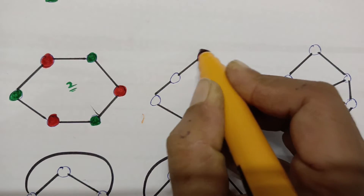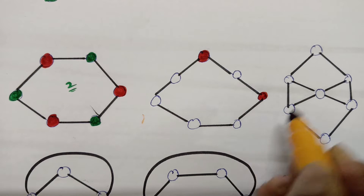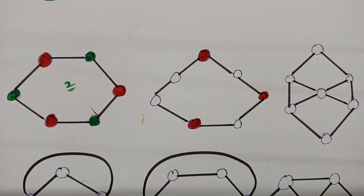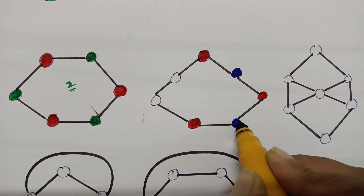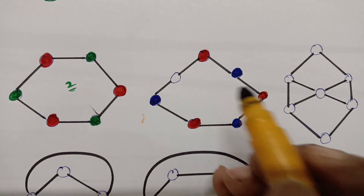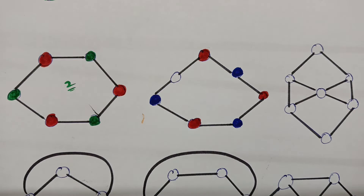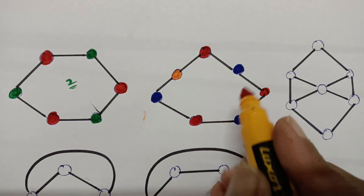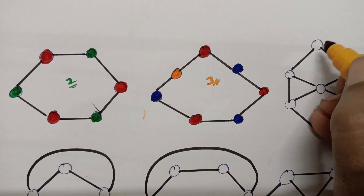For this graph, I use red color, leaving adjacent vertices and reapplying red to non-adjacent ones. Then I select blue and apply it where possible. Where neither red nor blue works, I select a third color. I used three colors total, so the chromatic number here is three.